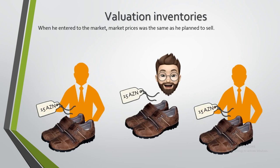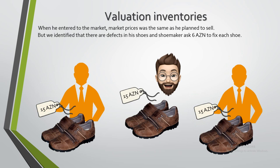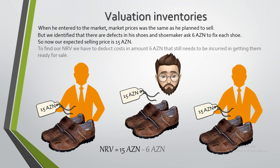When we entered the market, prices were the same as we planned to sell. However, we identified that there are defects in these shoes and a shoemaker asks 6 ACN to fix each of them. So our expected sale price remains 15 ACN, but to find our NRV we must deduct the cost of 6 ACN that still needs to be incurred in getting them ready for sale.